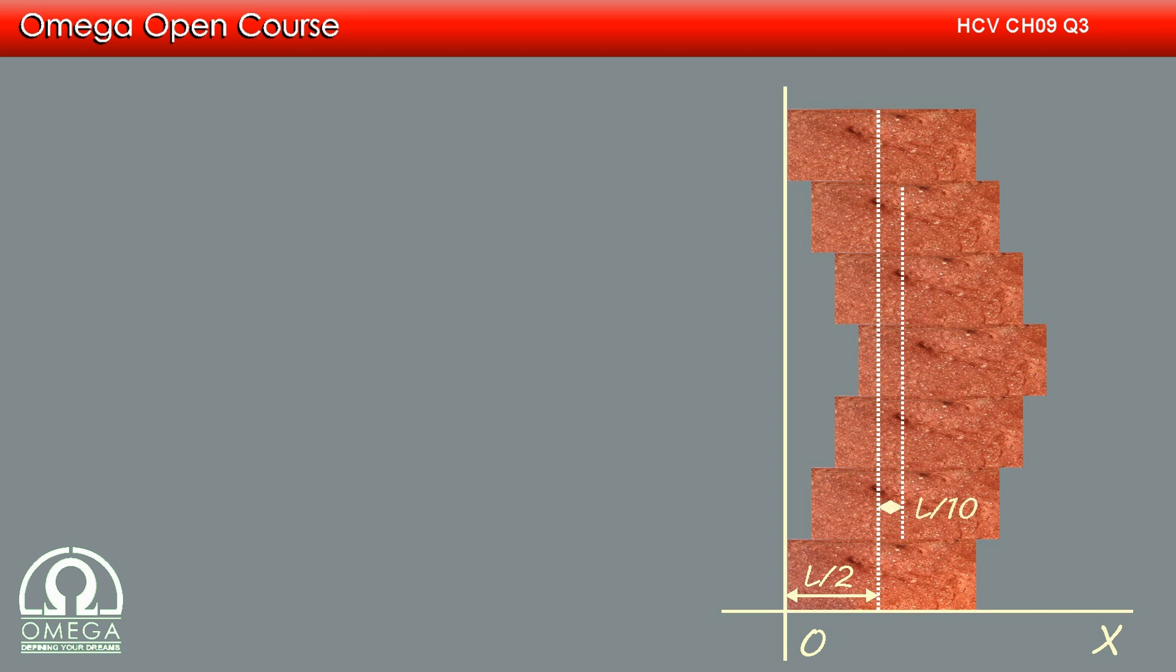The second brick from the top and the bottom is displaced from the lowest brick by L by 10. Therefore, the center of mass of these two bricks is at a distance of L by 2 plus L by 10, i.e. 6L by 10 from the y-axis.